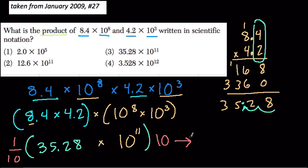Anyway, so 35.28 becomes 3.528. We're just dividing by 10. That means we're moving the decimal to the left. Here, we're multiplying 10 to the 11th by 10, and that gives you 10 to the 12th. And we're done. We have our answer in scientific notation. Alright, thanks.